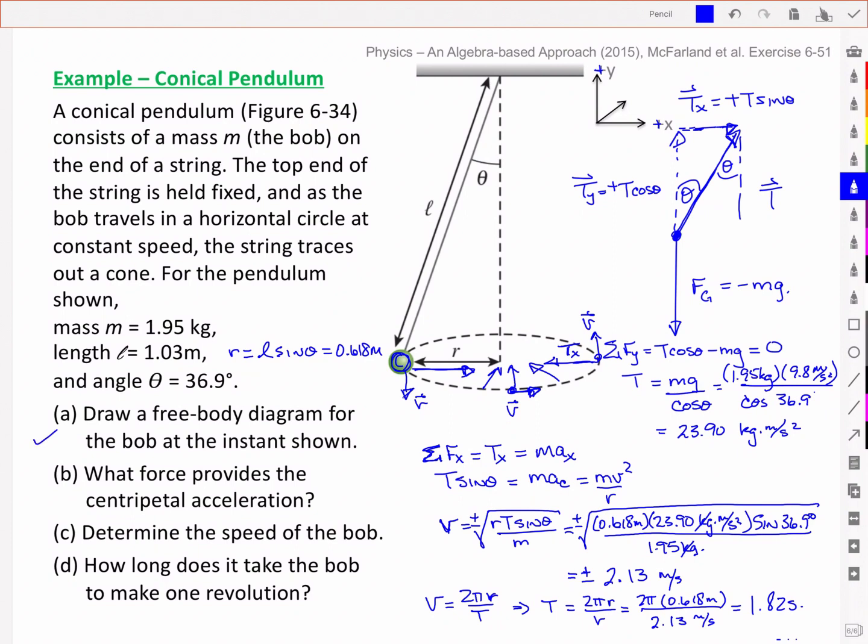So we've got our free body diagram. What force provides the centripetal acceleration? Well, it's that Tx component. We solved for T based on the y components, and then we were able to derive the velocity or the speed based on that Tx component. And finally, we looked at the velocity then relates the distance, that 2 pi r for the circumference divided by the period, and we solved for the period of revolution, then 1.82 seconds.